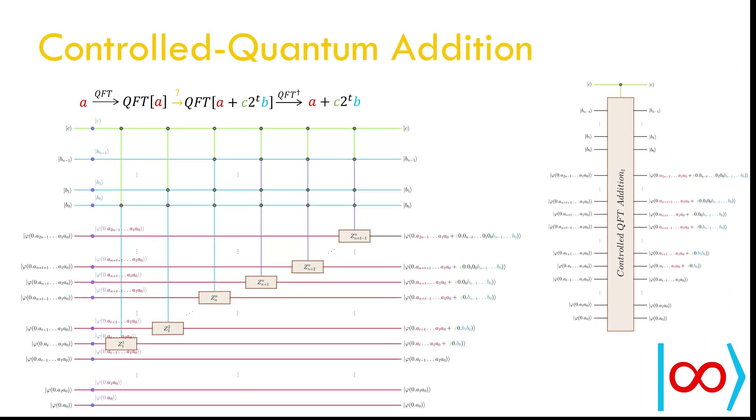Equipped with doubly controlled rotations, we can implement controlled quantum addition. The only change in the circuit is the extra control qubit C, controlling the rotations.